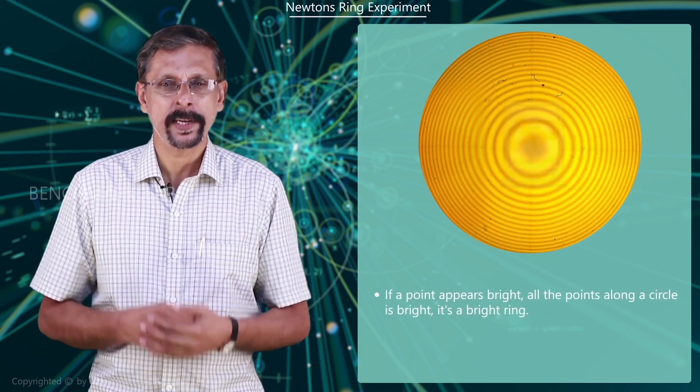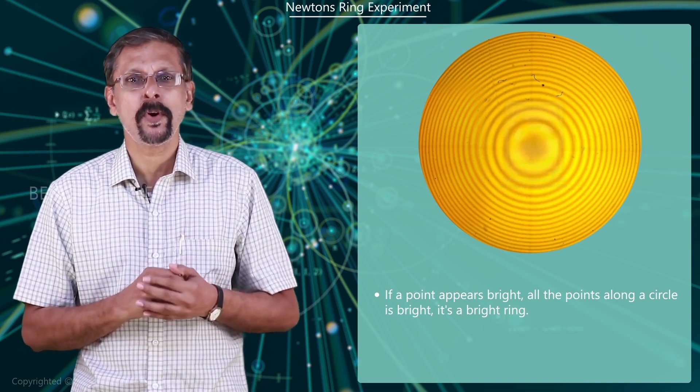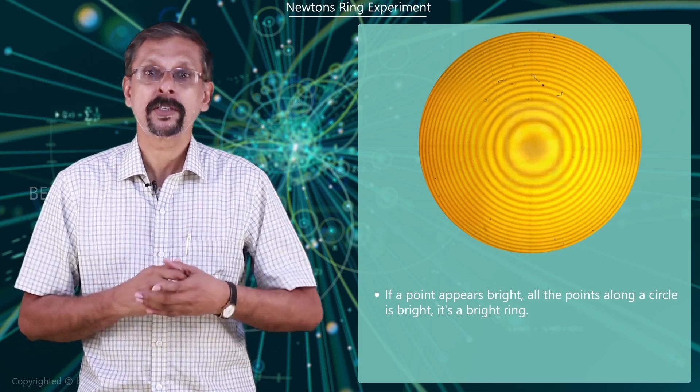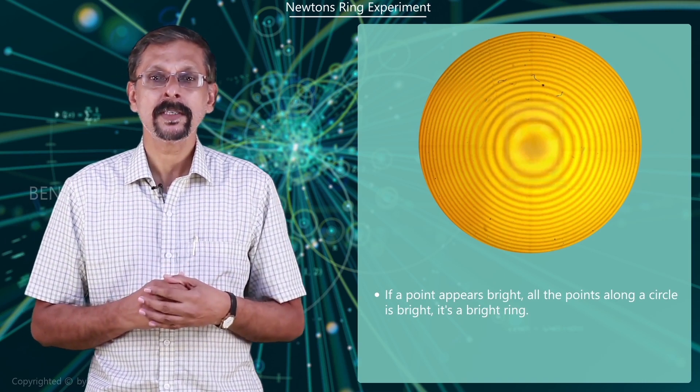If a point appears bright, all the points along a circle through this point are bright, since the thickness of the film is the same all along the circle. Hence it is a bright ring.